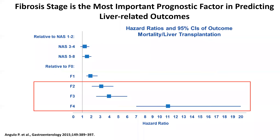The stage of fibrosis is the most important factor that predicts long-term outcomes — including dying from liver disease or needing a liver transplant. Patients with stage two, three, or four fibrosis are the ones we worry about most, because they can develop serious complications from liver disease.